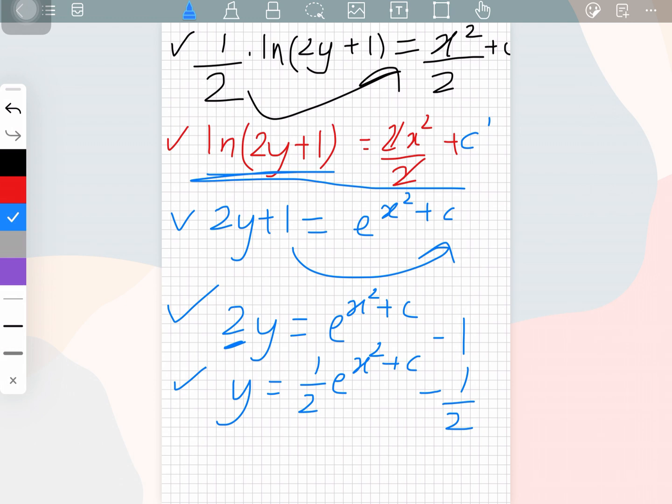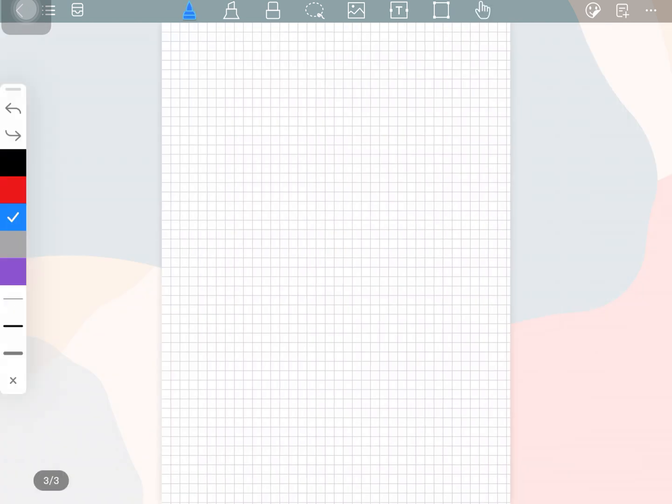I think the previous answer that we got using another step was different from this and I'll tell you how we can get that step. So minus 1 over 2 was the same. We got that as well. But then what we got different was there was no this and c was multiplying e to the power x square. So I'll show you what we can do.